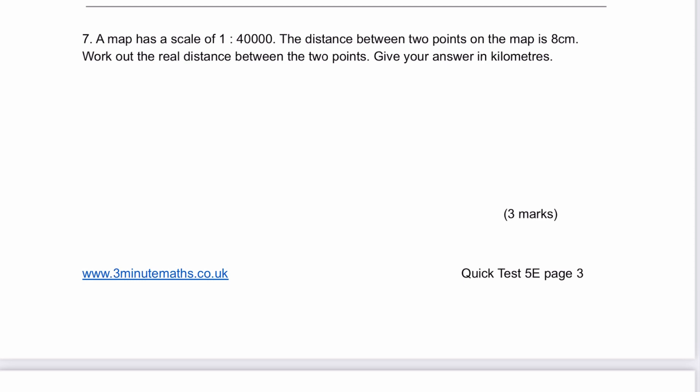A map has a scale of 1:40,000. The distance between two points on the map is 8 centimetres. Be very careful about these, because with a scale of 1:40,000, if we multiply 40,000 by 8, we get 320,000 centimetres. They're asking for the answer in kilometres. If I divide by 100, I get 3,200 metres, then divide by 1,000 to get kilometres. Therefore the answer is 3.2 kilometres. Very common question types.